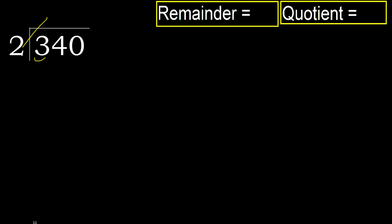4 is greater. 2 multiplied by 1 is 2, is not greater — ok. Subtract. Next.